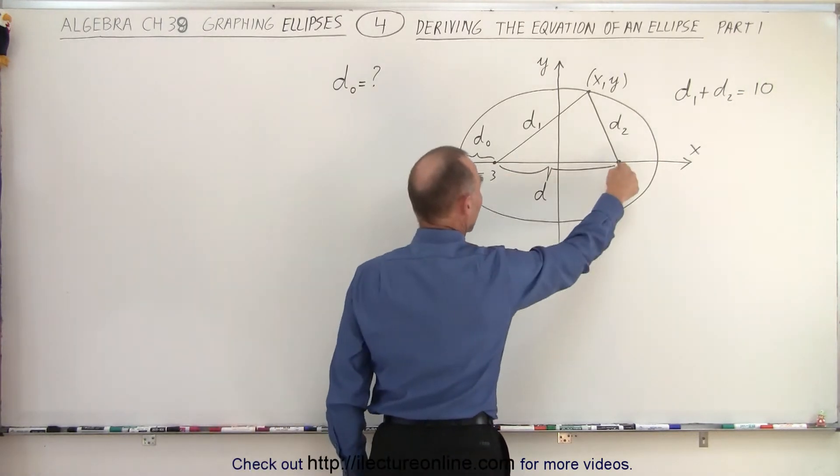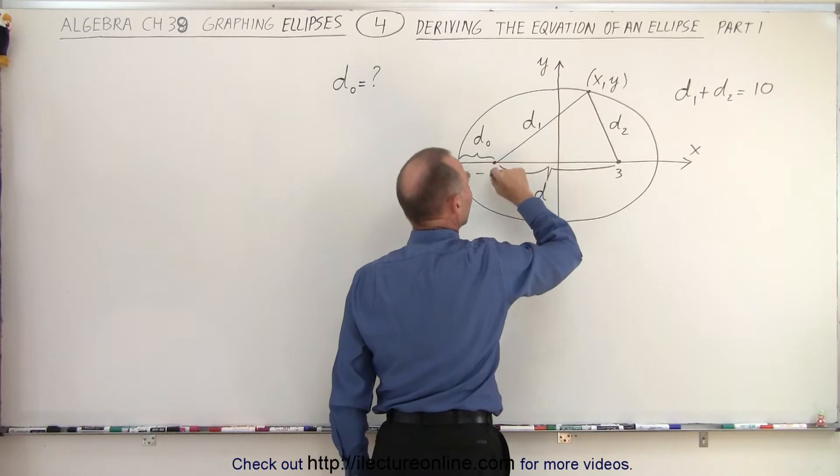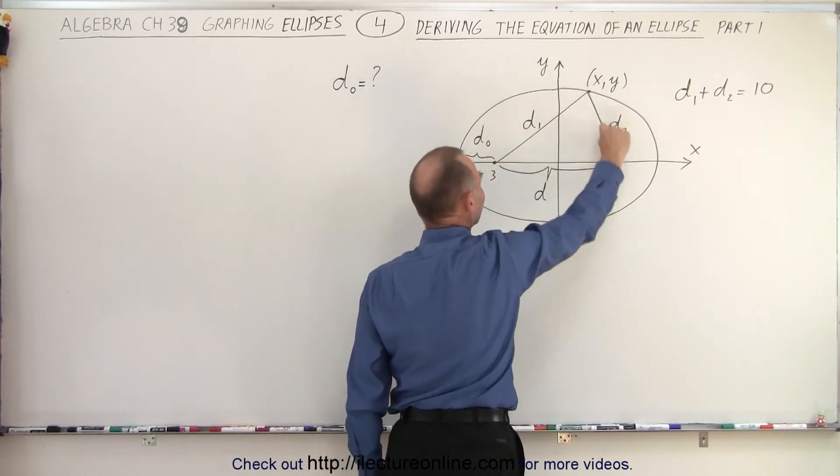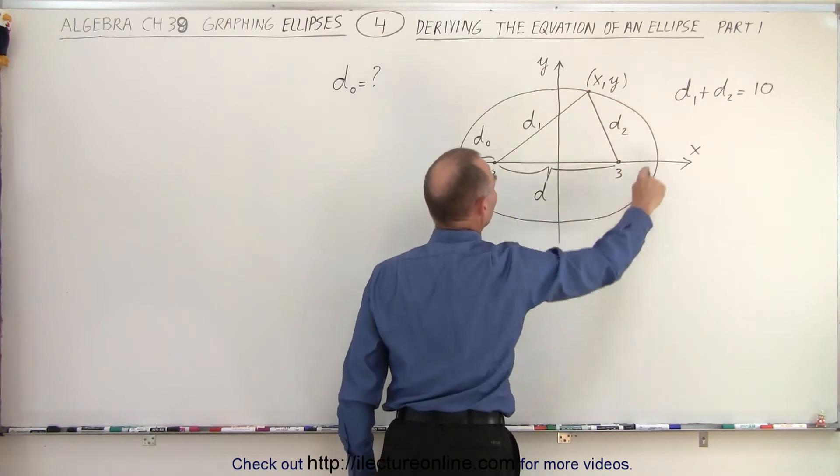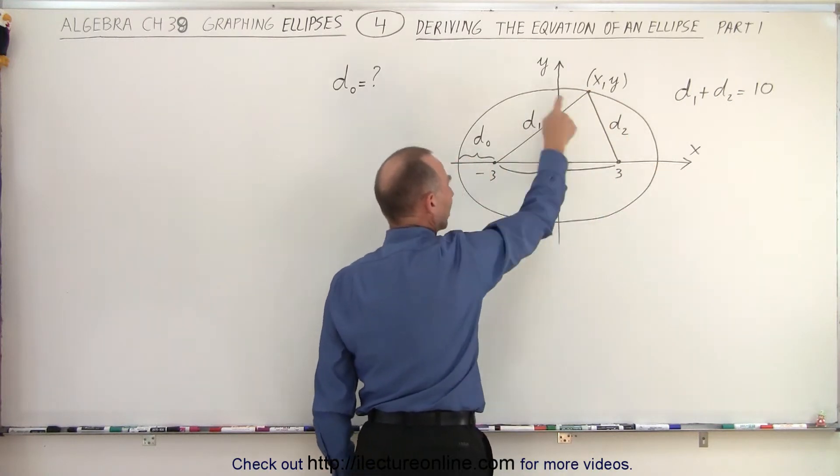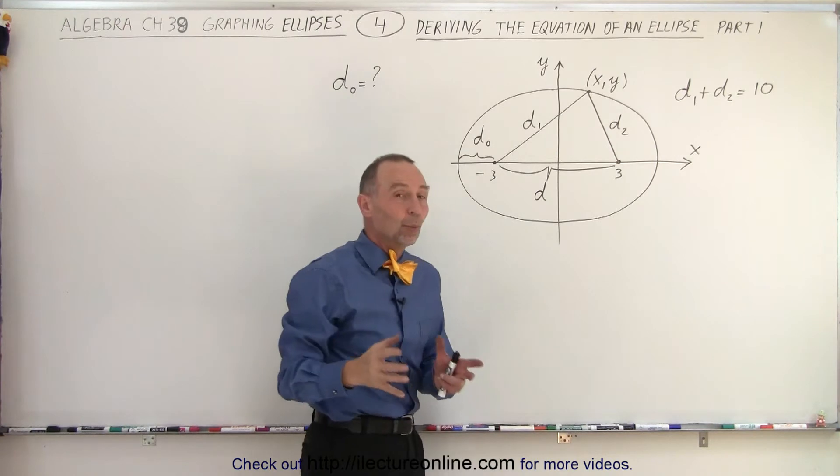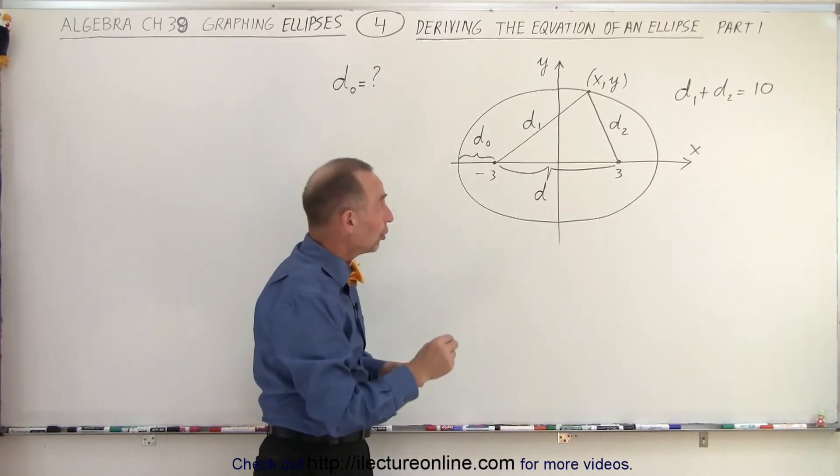Also, assuming that these are thumbtacks and there's our string, we then stretch the string so that it's tight. And the string will then touch the edge of the ellipse. Anywhere along the edge of the ellipse, we can call that point x and y. Those are then the general coordinates of any point along the line of the ellipse.